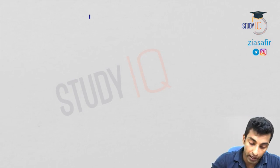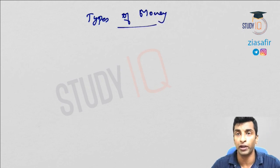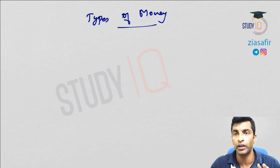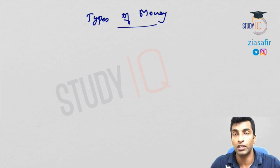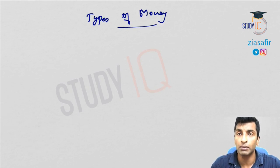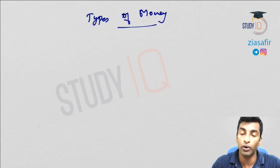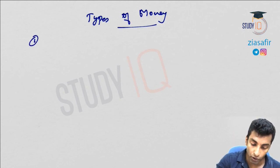Now we will discuss different types of money and also the evolution of money. We started with the barter system — commodity to commodity exchange — and discussed its problems: double coincidence of need, and valuation difficulties. Now we'll discuss different types of money, starting with full-bodied money.